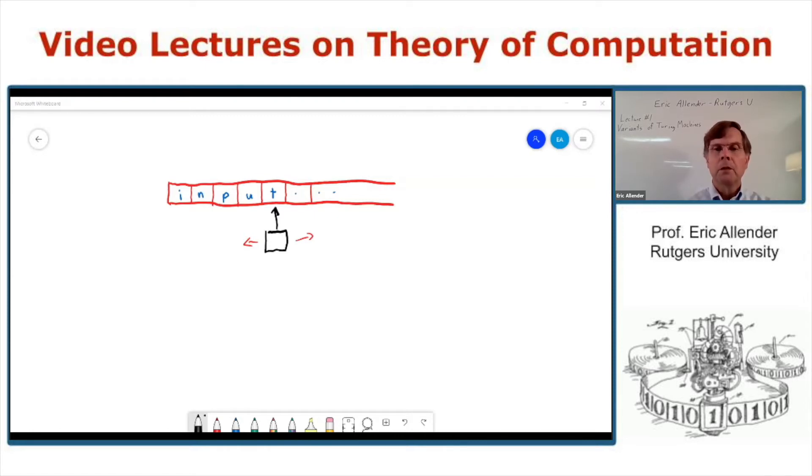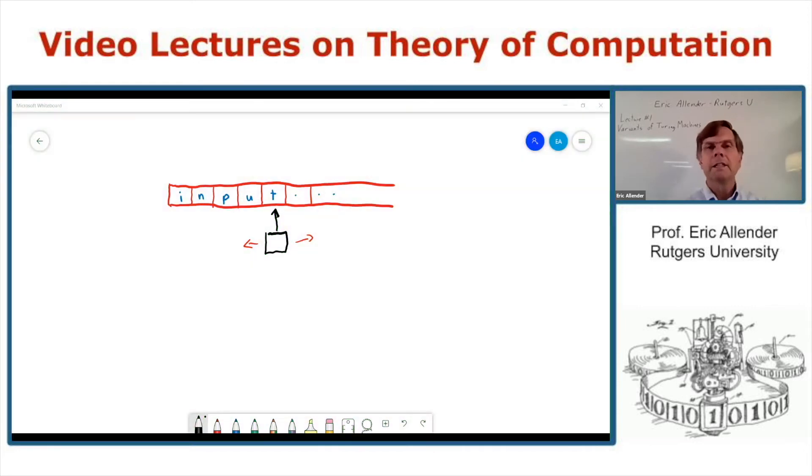So in order to discuss that, let's take a look at what the model of Turing machine is that you've been looking at. It probably looks something like this. You have this infinite tape that has some input written on it and you've got this box that walks around and reads and writes on the tape.